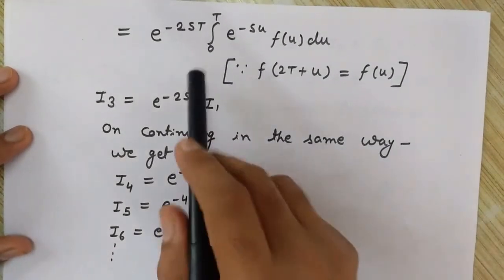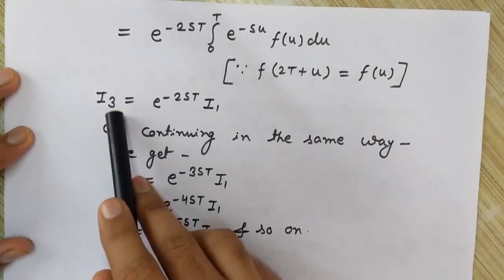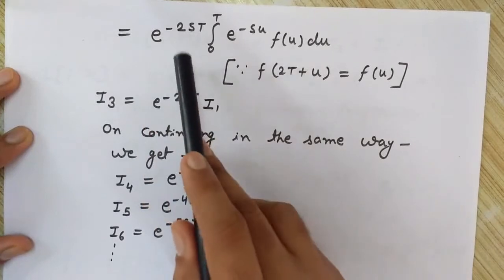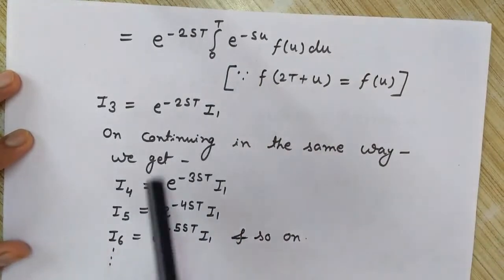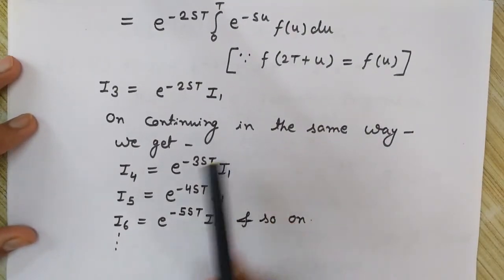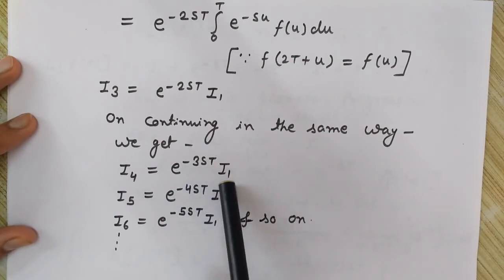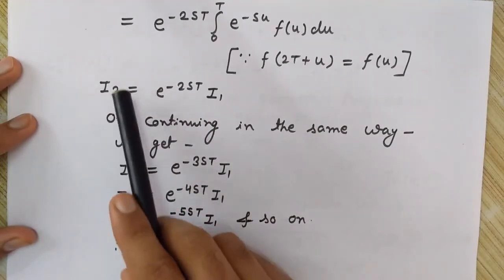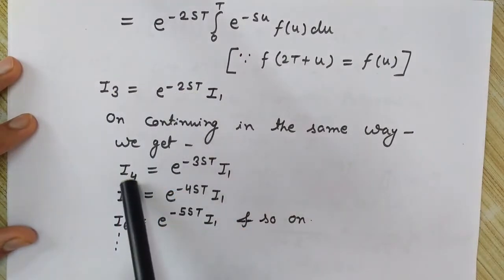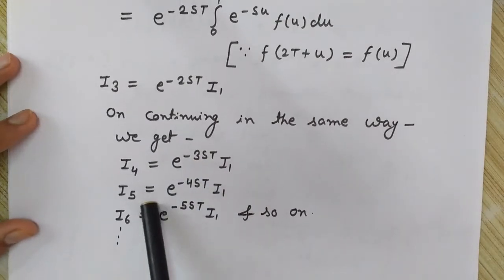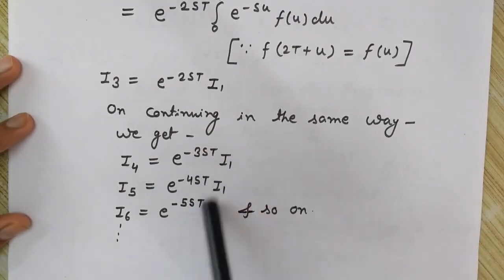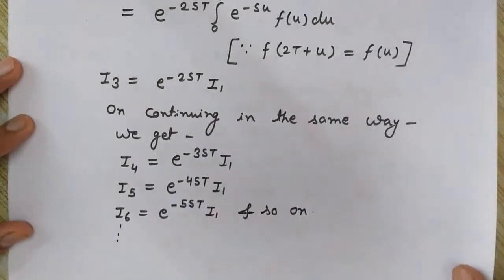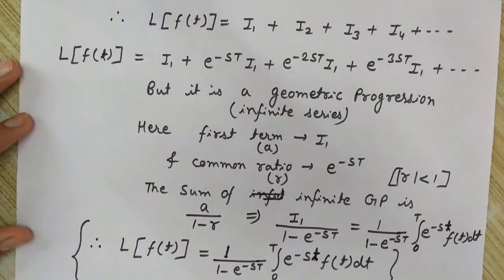Continuing in the same way, I4 equals e to the power minus 3sT times I1, I5 equals e to the power minus 4sT times I1, and so on. We can see the pattern: each successive term introduces one more factor of e to the power minus sT, expressing all integrals I2, I3, I4, I5, and so on in terms of I1.